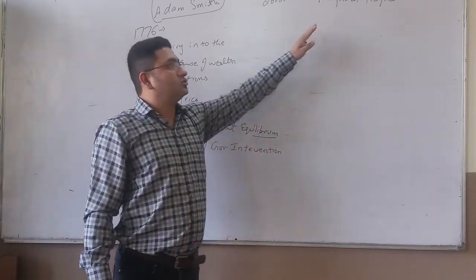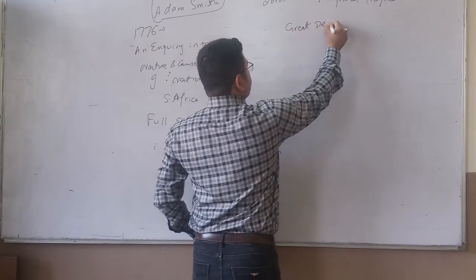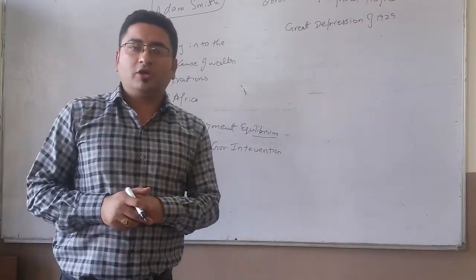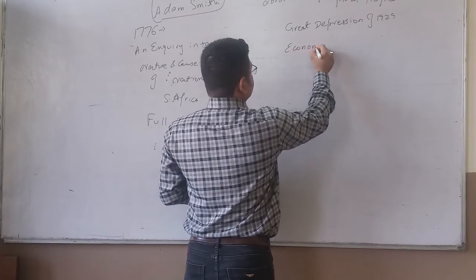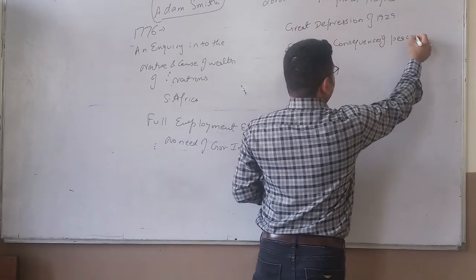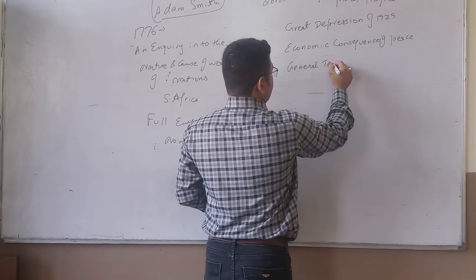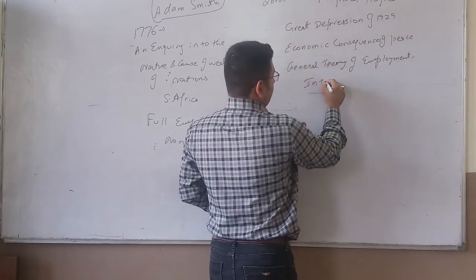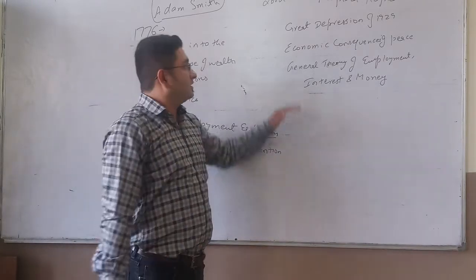But, Lord John Maynard Keynes, what he observed, during the Great Depression, during the Great Depression of 1929. The book was Economic Consequences of Peace. The other book was General Theory of Employment, Interest, and Money.